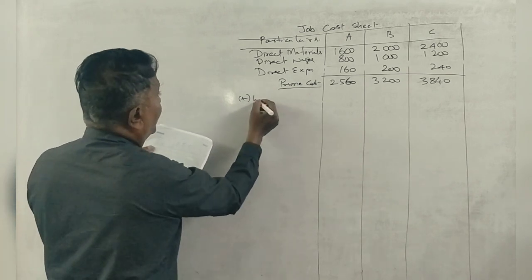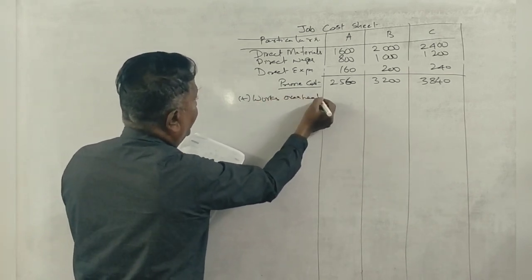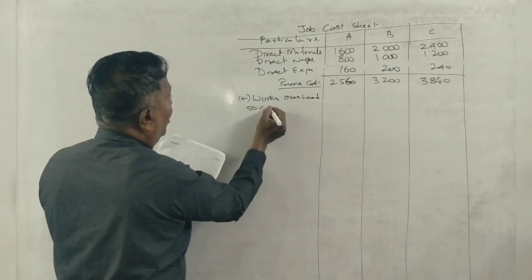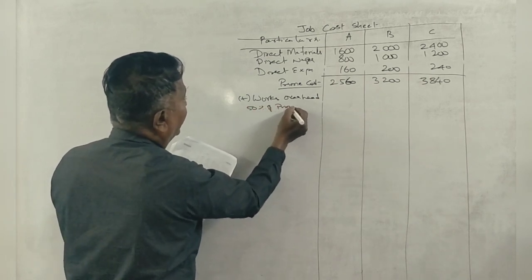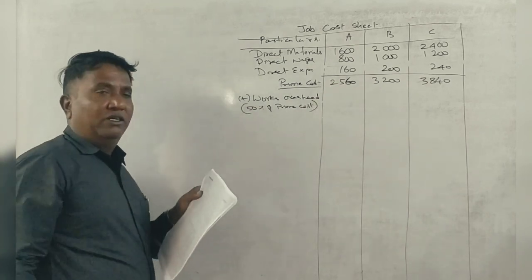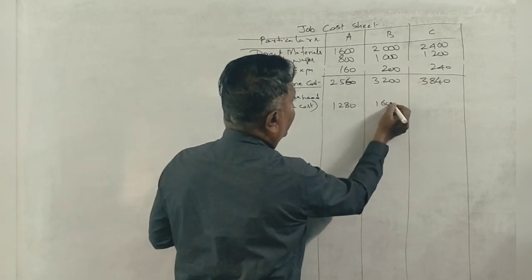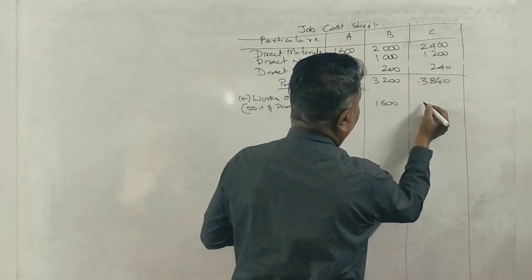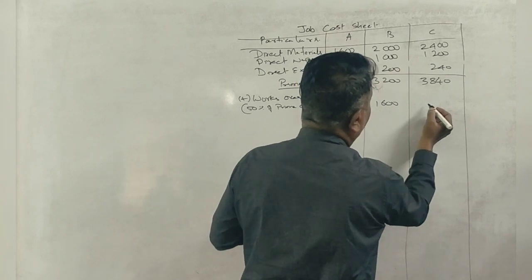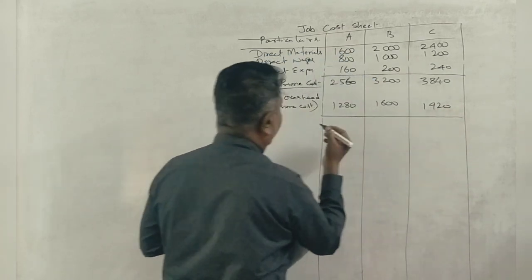Now works overhead - 50% of prime cost. So 1,280, 1,600, and 1,920.